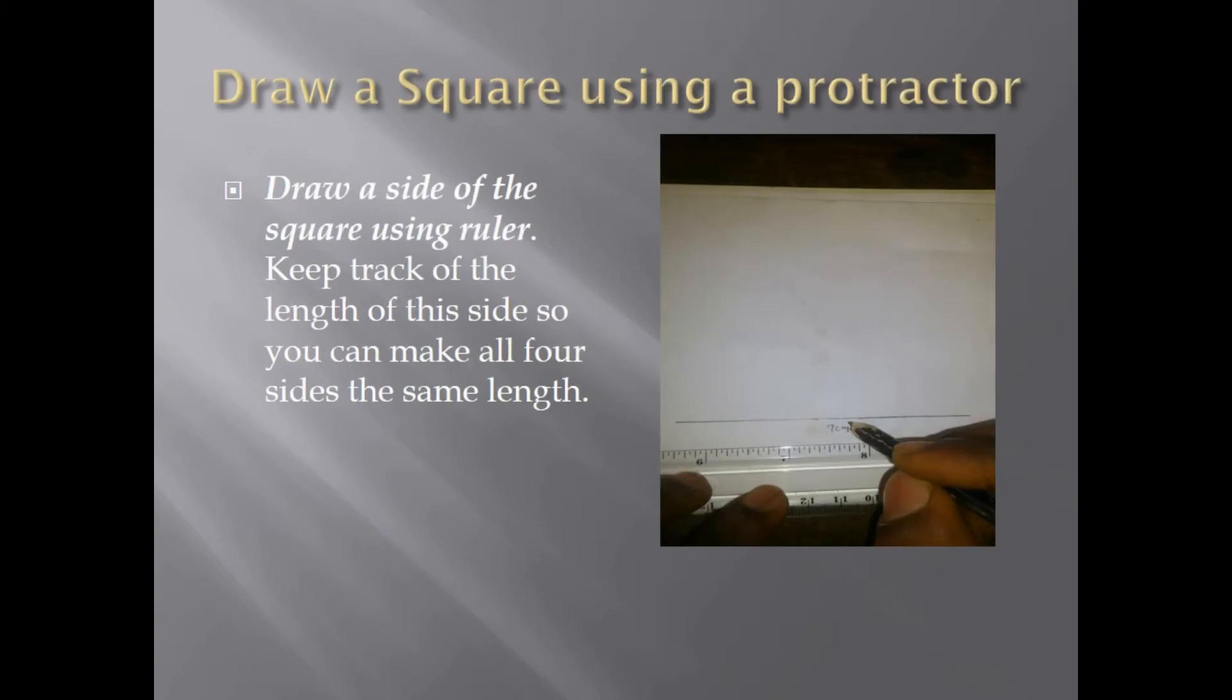Drawing a square using a protractor. Firstly, you draw a side of the square using a ruler by keeping track of the length of the sides so you can make all four sides the same length. The line drawn will enable you to get the sides of the other side of the square.